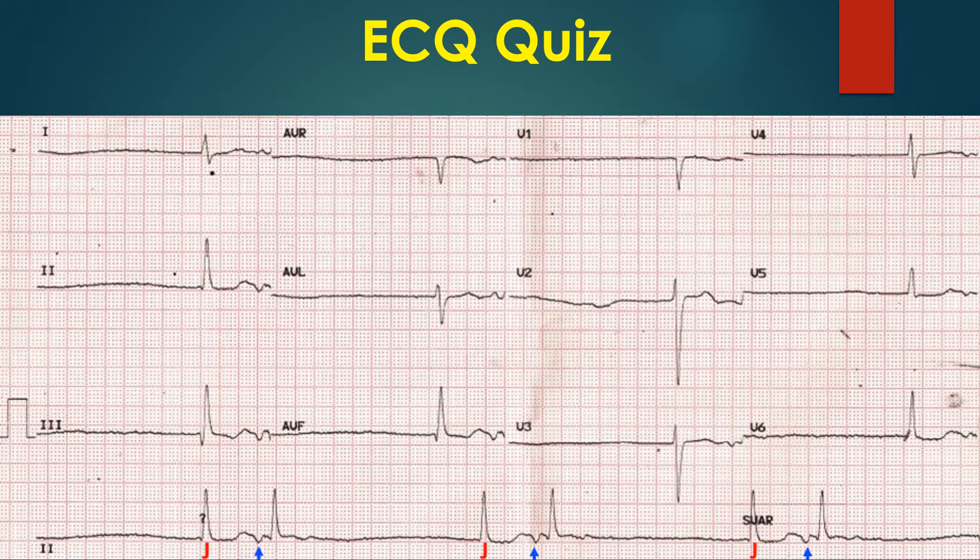In low junctional rhythm, inverted P-waves occur after the QRS complex, as ventricular activation occurs before atrial activation. In mid-junctional rhythm, P-waves are not visible, as there is simultaneous activation of the ventricles and atria, and P-waves are obscured by the QRS complex. Beats marked as J can be considered mid-junctional rhythm.